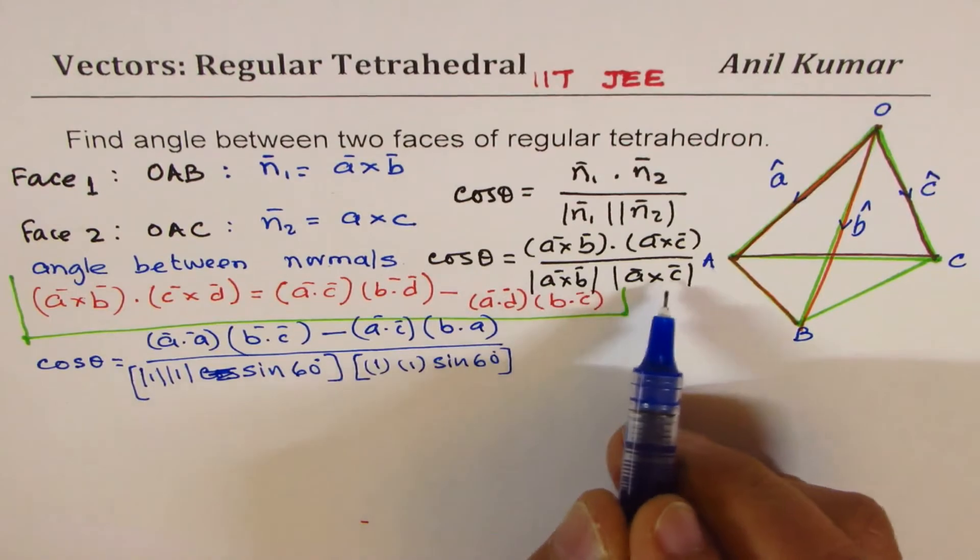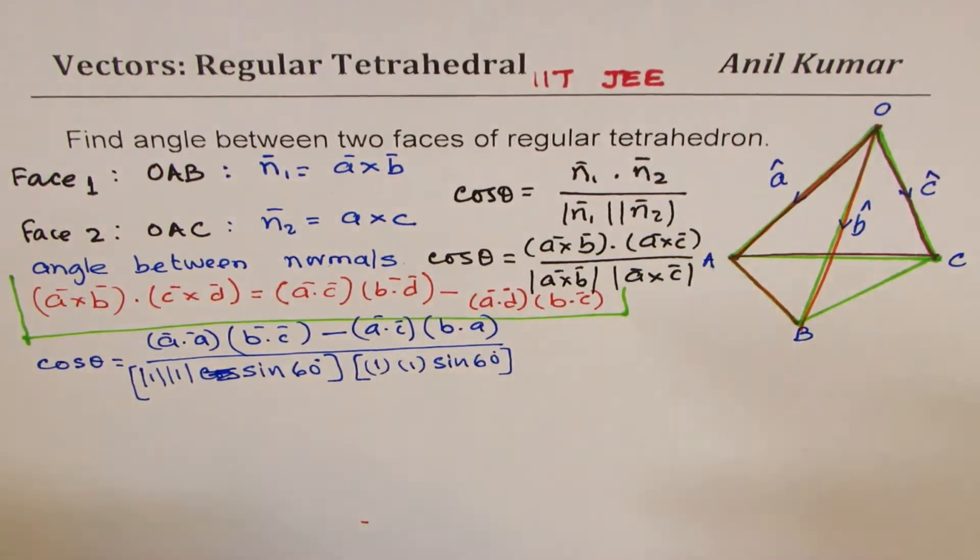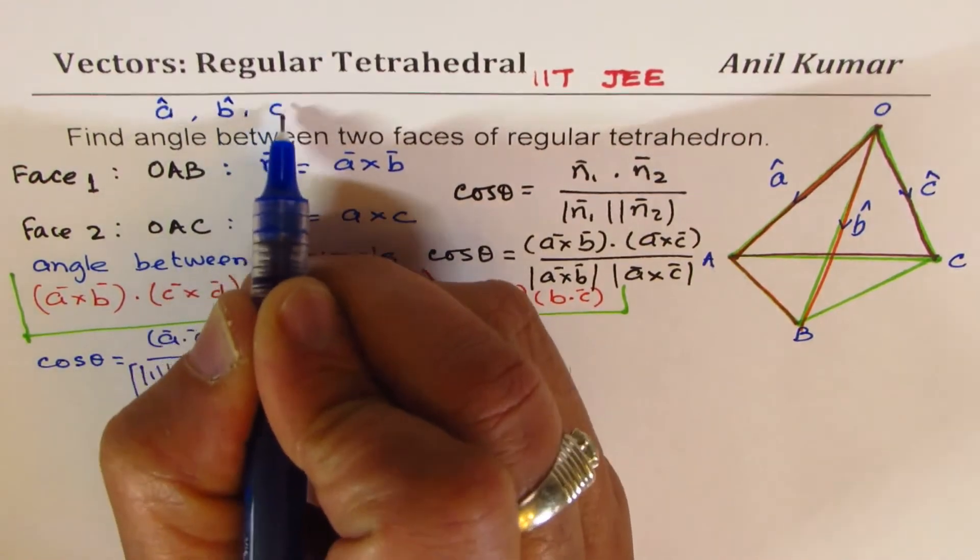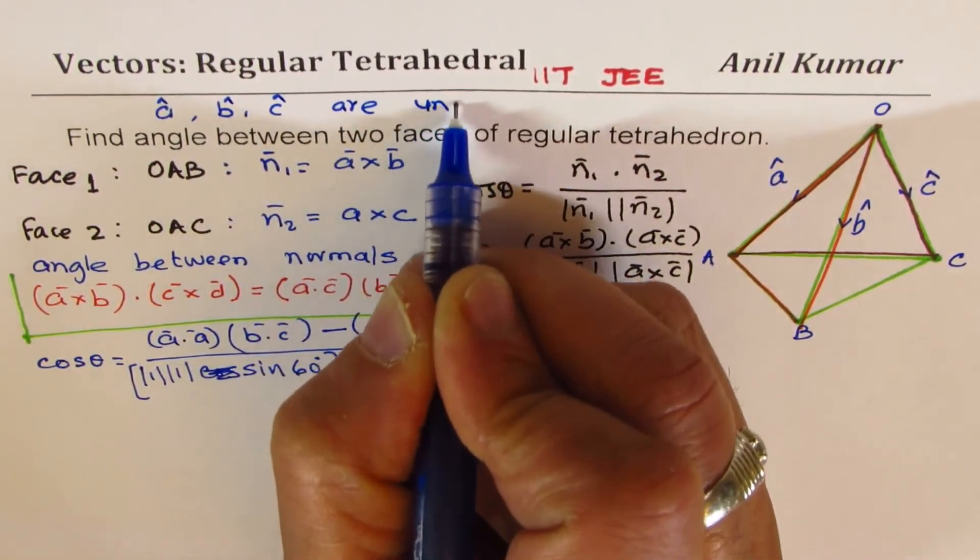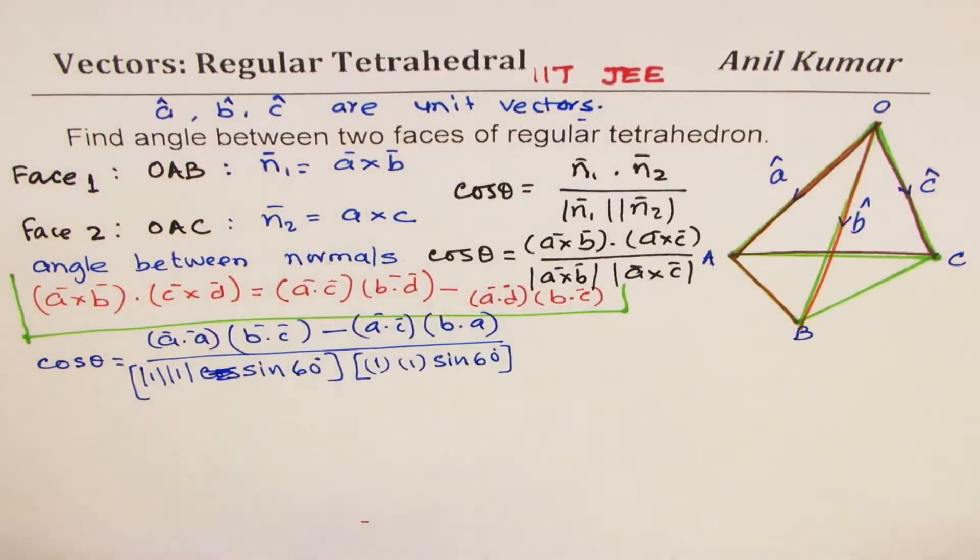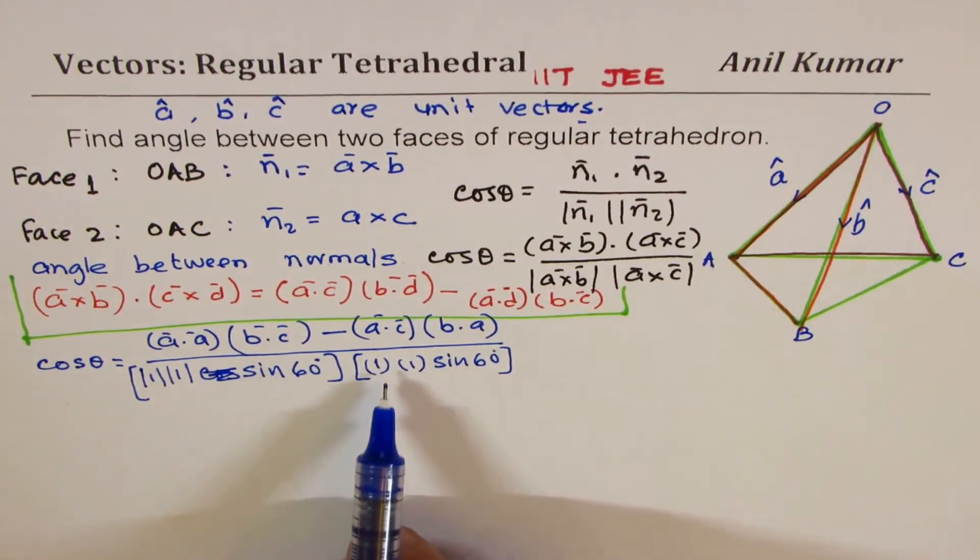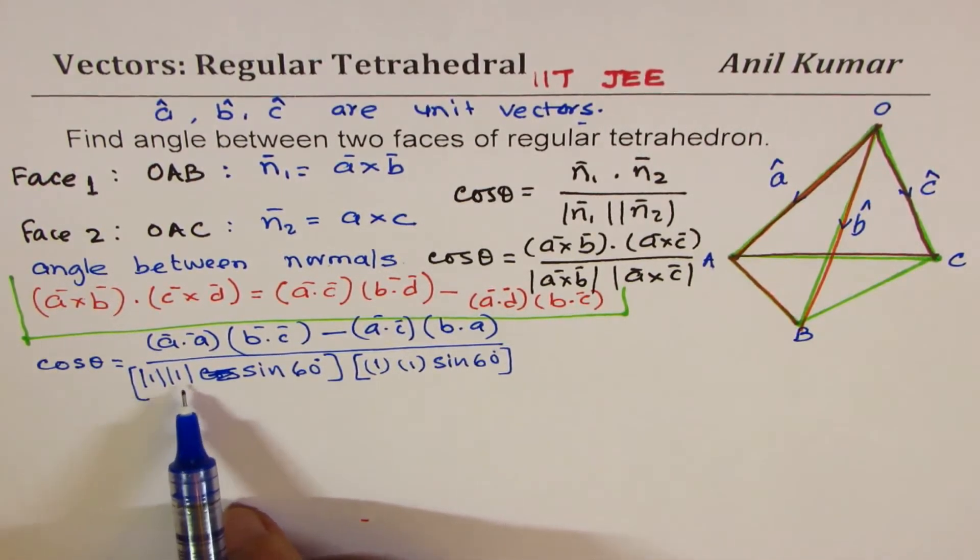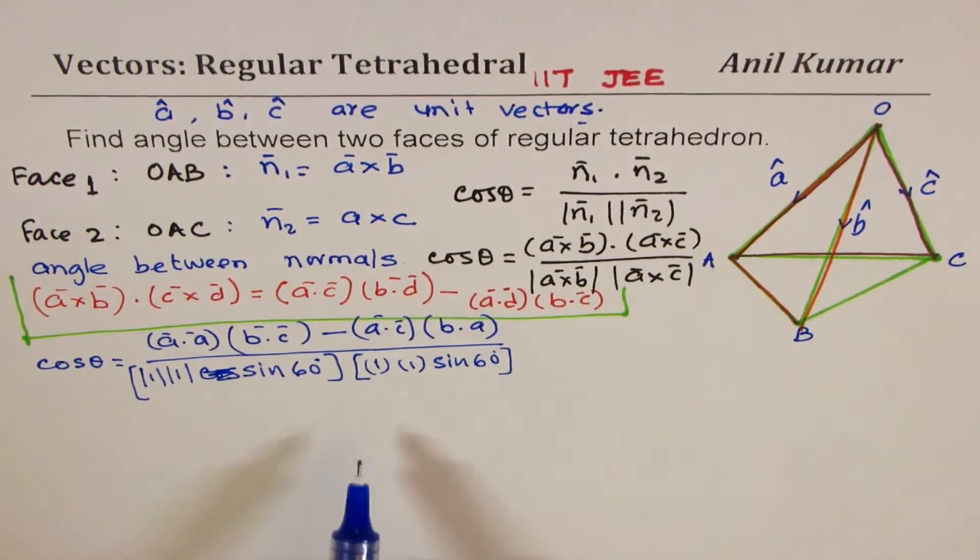Since A, B, C are unit vectors, their magnitude is one. So magnitude of A and C is one, magnitude of A and B is one. Angle between them is 60 degrees.